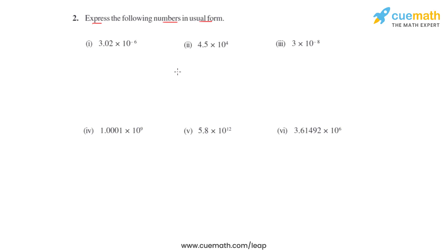Before we start, let's understand a simple logic: whenever the power of 10 is negative, the decimal moves towards left. When the power is positive, the decimal moves towards right.